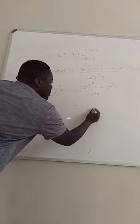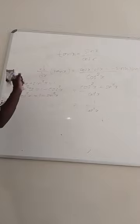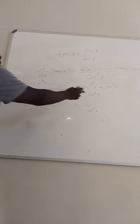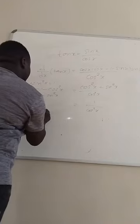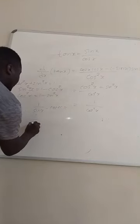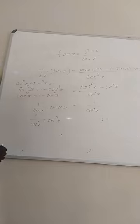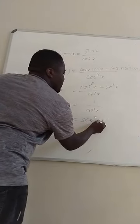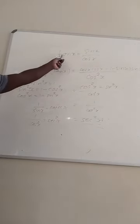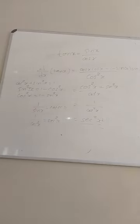Using the Pythagorean identity, cos squared x plus sin squared x equals 1, so the expression becomes 1 over cos squared x. Since 1 over cos x equals sec x, then 1 over cos squared x equals sec squared x. That proves that the derivative of tan x is sec squared x. So that's the proof. Let me check if anyone has raised their hand with a question.